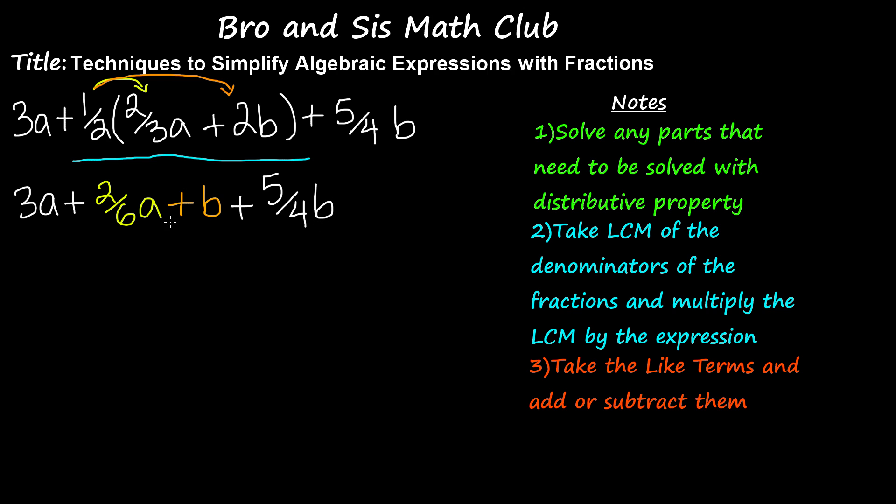Now, since you've done that, the second step is to take the LCM of the denominators of the fractions and multiply the LCM by the whole expression. The only two fractions that we have are 2 over 6 and 5 over 4. And the denominators are 6 and 4. The LCM of 6 and 4 is 12.